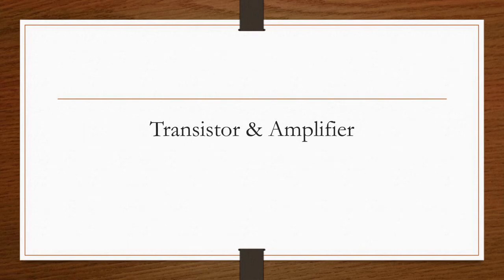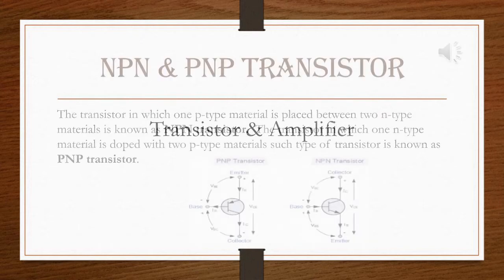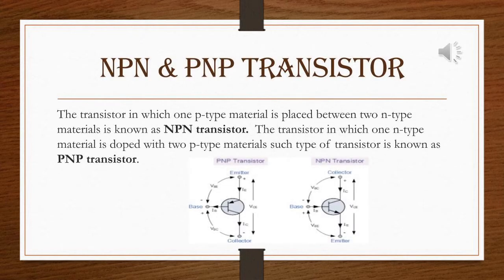Hi everyone, today we'll see the topic transistor and amplifier. As we know, there are two types of transistors: NPN and PNP. The transistor in which one P-type material is placed between two N-type materials is known as an NPN transistor. The transistor in which one N-type material is doped with two P-type materials is known as a PNP transistor.